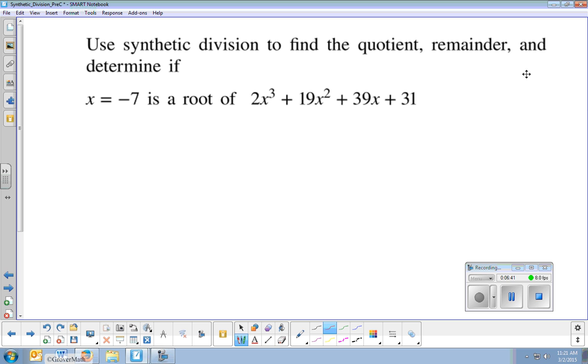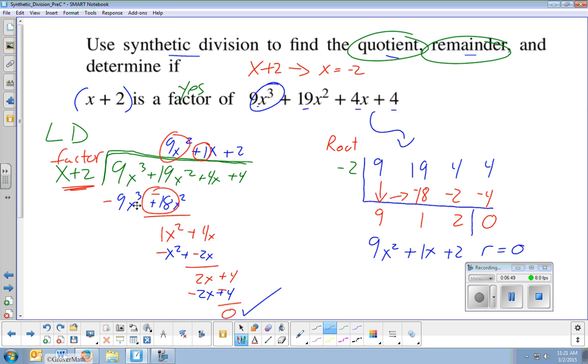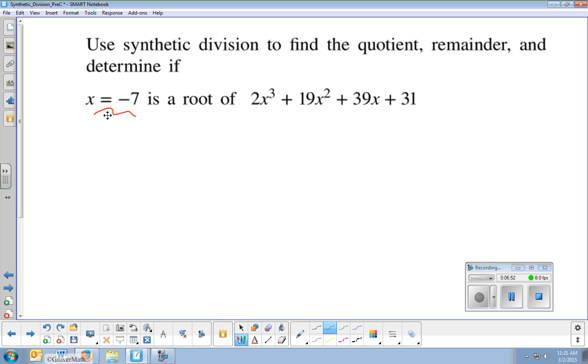So, use synthetic division to find the quotient remainder and determine if x equals negative 7 is a root. Is a root. Previous one said factor. Is it a root of that? Now, I could do long division. I could turn it into x plus 7, because that would be the factor form, and do long division, but we're not going to do that. We're going to do synthetic division.